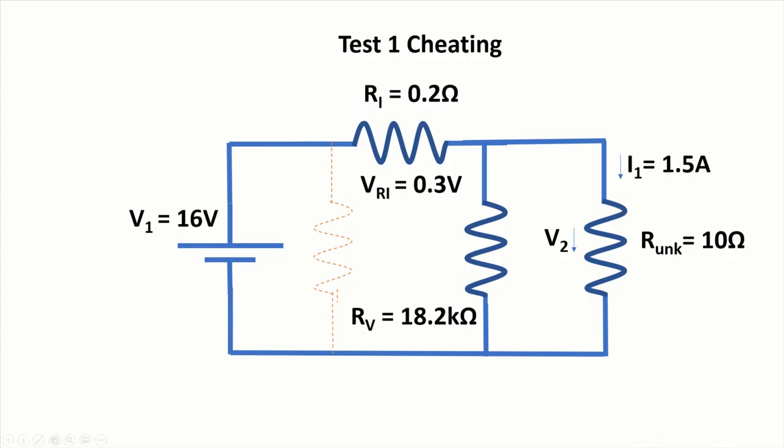So let's have a look at the test one. And here I've done some cheating. So the unknown resistor is already calculated. And basically, I've put in the values of the internal resistances of both the current meter and the voltage meter.